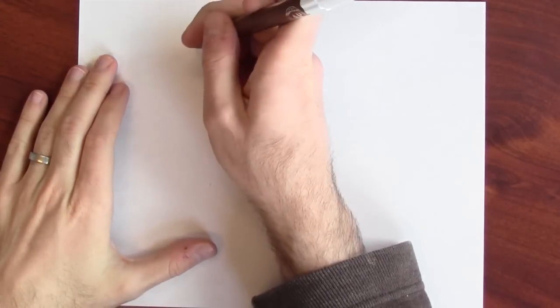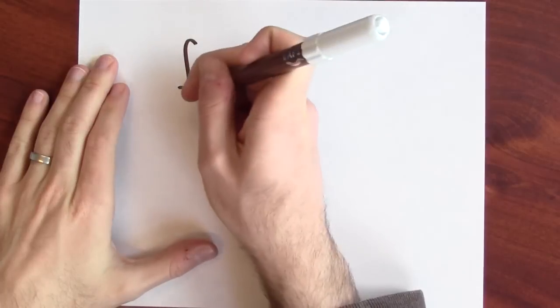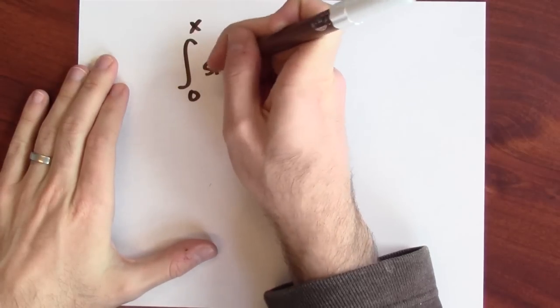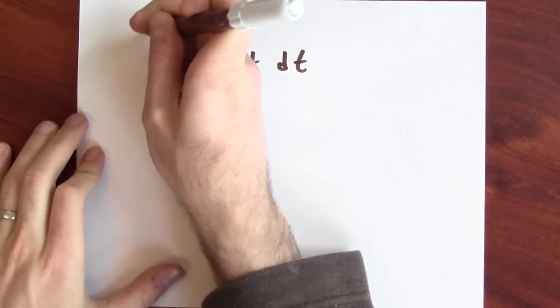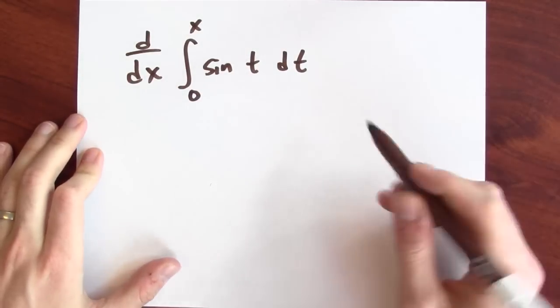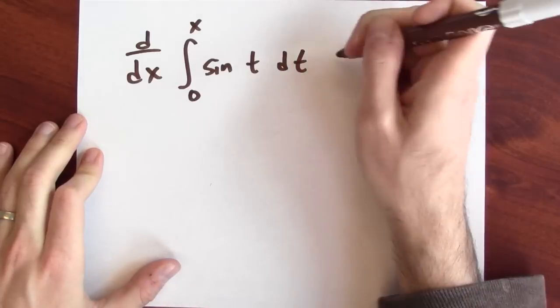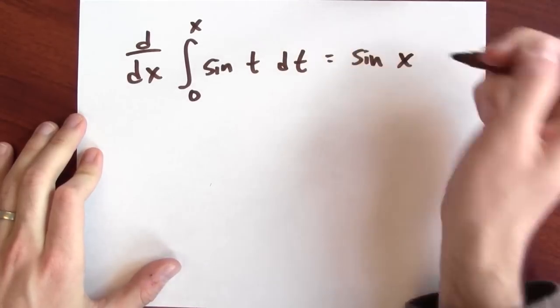Here's an example to play around with. If I take the integral from 0 to x of sine of t dt, let's think about the derivative of this with respect to x. By the fundamental theorem of calculus, this is sine of x. The fundamental theorem of calculus is the derivative of the accumulation function is the integrand.